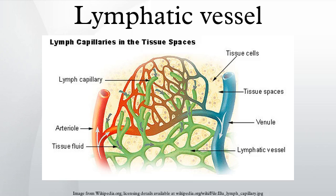Lymph vessels are lined by endothelial cells and have a thin layer of smooth muscles and adventitia that bind the lymph vessels to the surrounding tissue. Lymph vessels are devoted to propulsion of the lymph from the lymph capillaries, which are mainly concerned with absorption of interstitial fluid from the tissues.